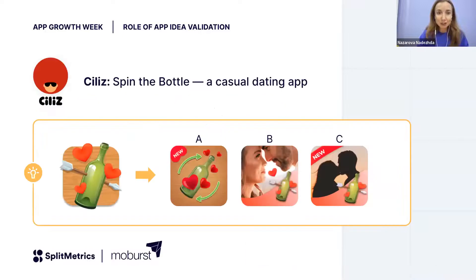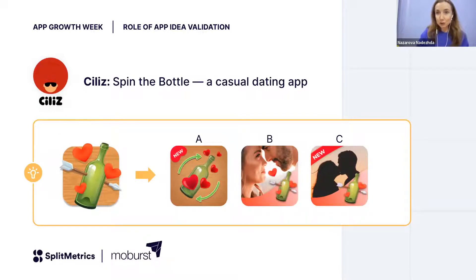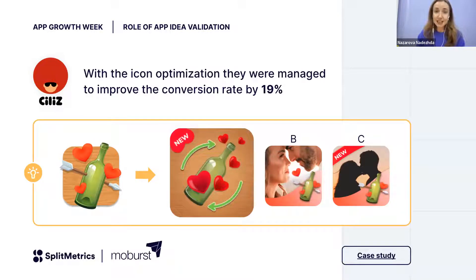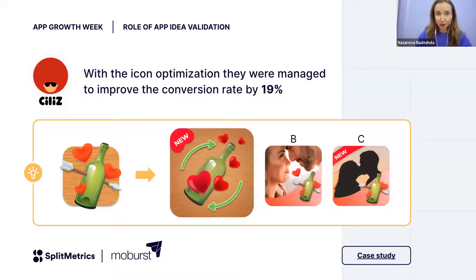Here is a small task — it's our client, C-List Game. They tested an icon with us. On the left was their current icon, and A, B, and C were the options being tested. Try to guess which icon wins. The right answer was A. The A icon shows the mechanic of the game, and most of the audience would be interested in that mechanic. This shows why you have to validate.